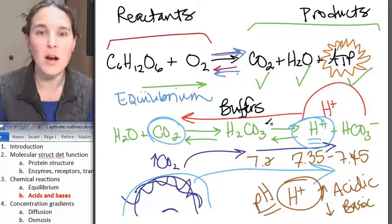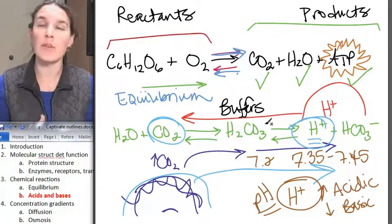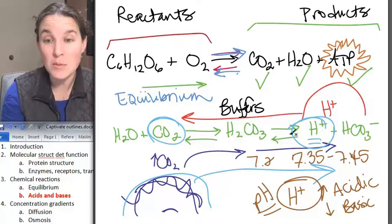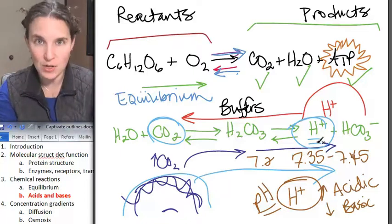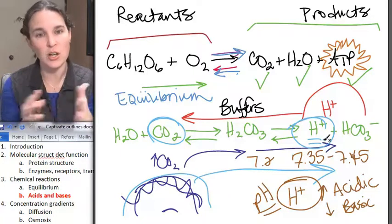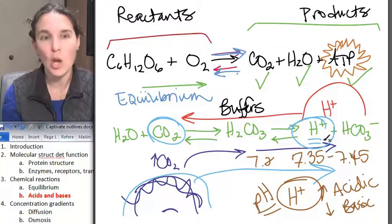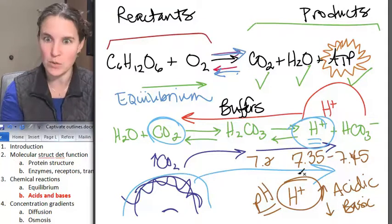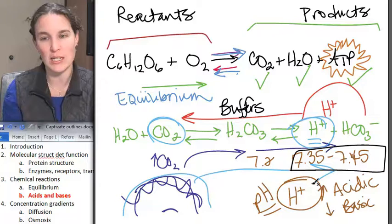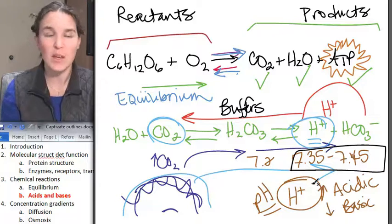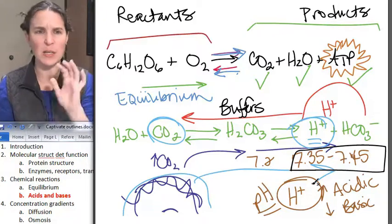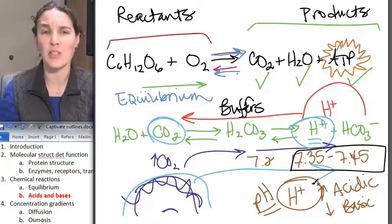And buffers are systems that prevent changes in pH. So a buffer system will actually absorb hydrogen ions and prevent large shifts in pH, which is super handy since this is the range that we need to maintain our pH in. Are you good? It's important to be comfortable with the idea of hydrogen ions.